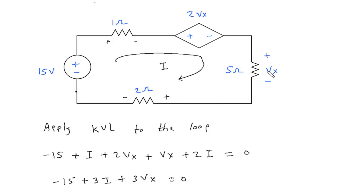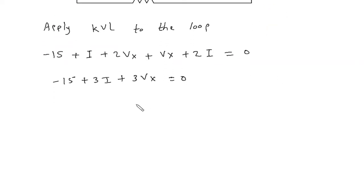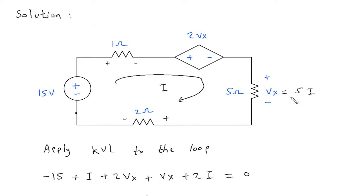From this, Vx is equal to phi u into i, or i is equal to Vx by phi u. Since i is equal to Vx by phi u from Ohm's law,